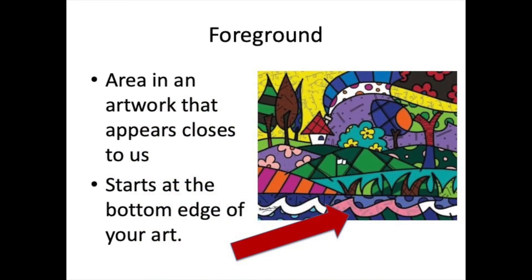The foreground is the area in an artwork that appears closest to us. It starts at the bottom of your artwork and objects in this area are the biggest — they're big and they look like they're close to you.